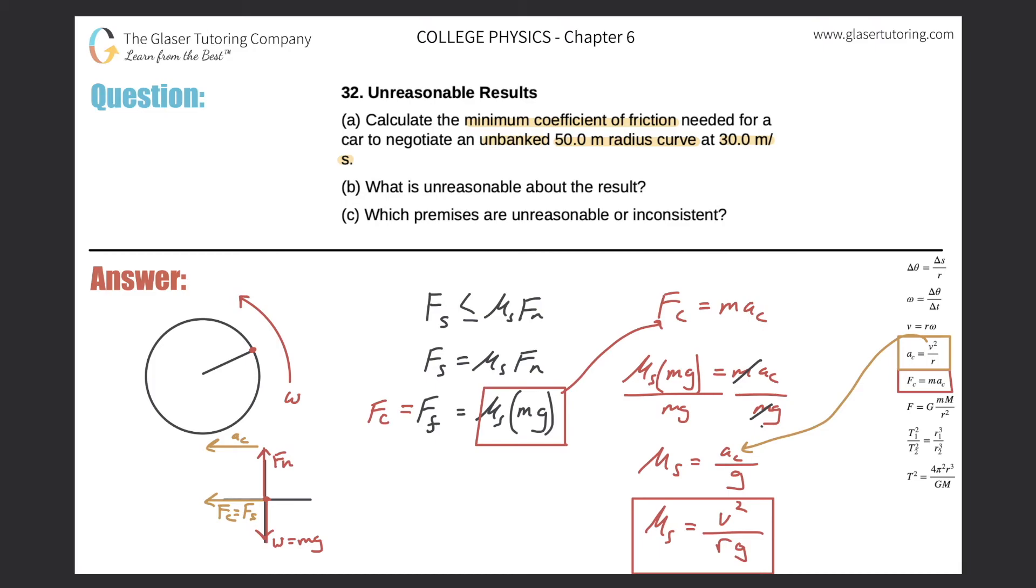Now that being the formula, all I got to do is plug in the numbers. I'll do it over here on the left-hand side. Coefficient of static friction is equal to 30.0 meters per second squared all over the radius, which was 50, times g, 9.80.